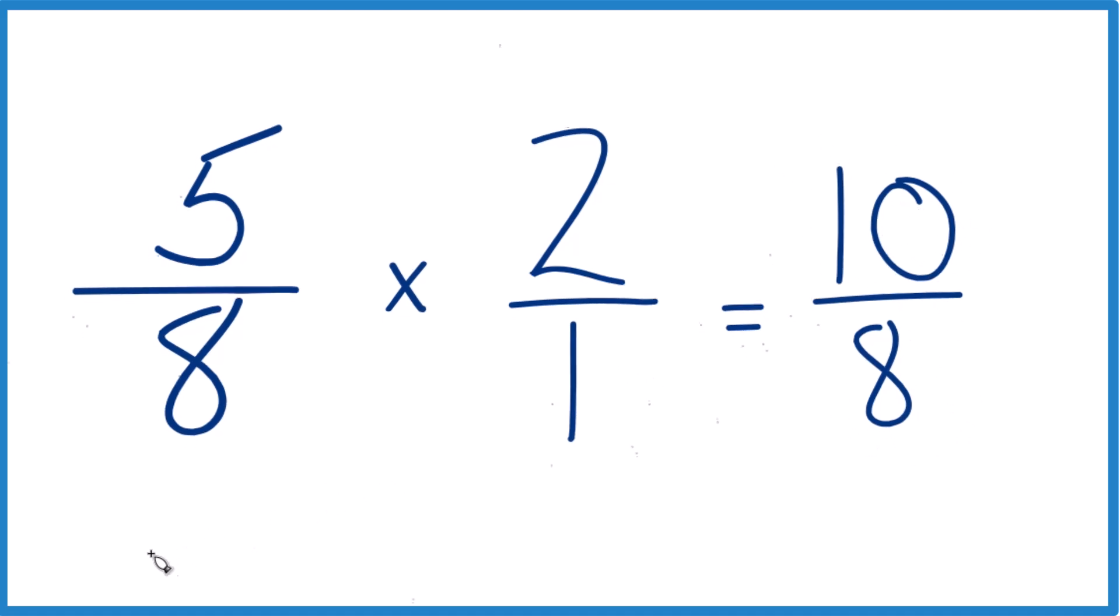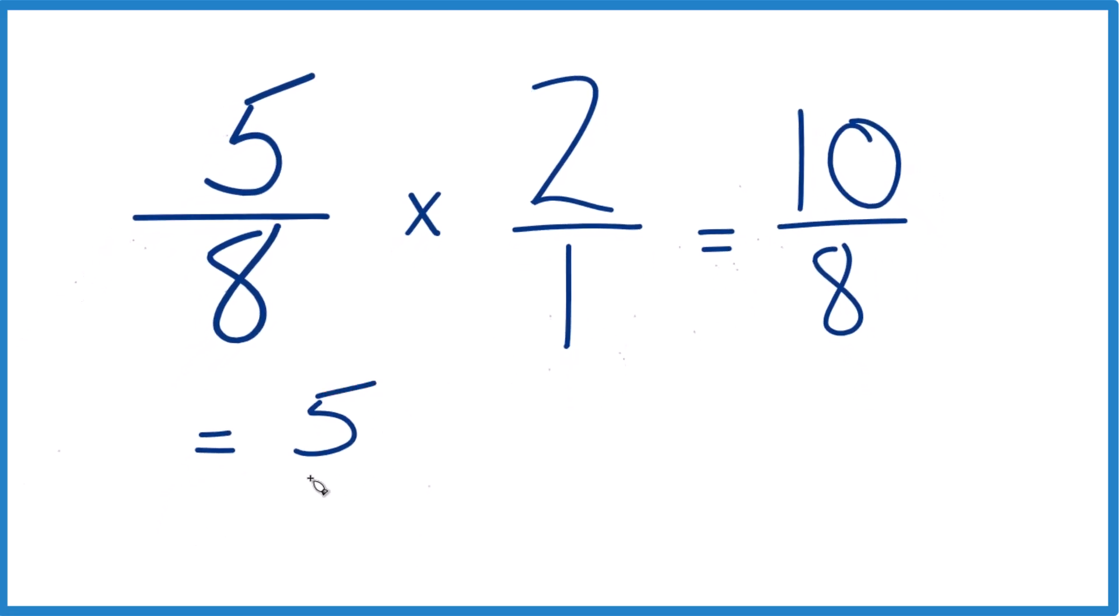10 divided by 2, that equals 5. 8 divided by 2, that equals 4. So we could call it 5 fourths. Still improper, though, because the numerator is larger.